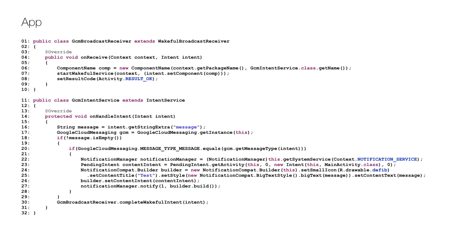Now let's get back to the app. This is the code we need to add to show a notification of the message in the app, and this requires two classes. The first one, GCM Broadcast Receiver, links to the second class and makes sure that the device doesn't go to sleep until the message is handled. The second class, GCM Intent Service, picks up the message on line 16, gets the GCM instance on line 17, and if the message is not empty — checked on line 18 — and the message is of the correct type — checked on line 19 — a notification is created and sent on lines 22 to 27.